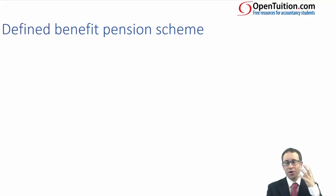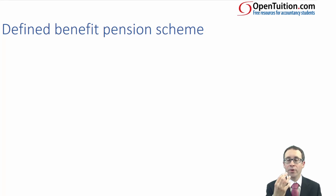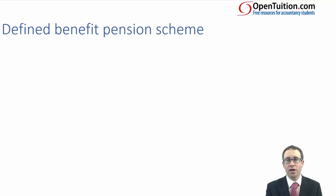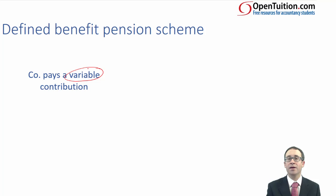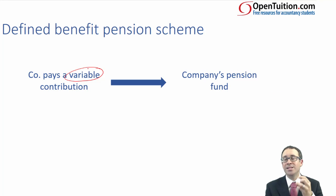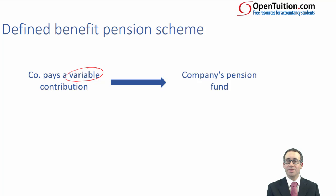What you are likely to see from a numerical perspective is the defined benefit scheme, or final salary scheme. The difference here is that the benefit you get upon retirement is defined — instead of a variable return, you get a fixed return at the end. The risk lies with the company because they are guaranteeing you that fixed return. In order to generate it, the company pays a variable contribution. If the scheme is doing well, they don't need to pay in so much; if not, they need to top up the pension scheme. The risk lies with the company, which pays into its own pension fund, and there must be sufficient cash within it to pay you on retirement.